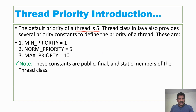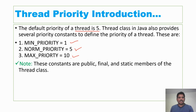The Thread class provides 3 constants: MIN_PRIORITY, NORM_PRIORITY, and MAX_PRIORITY. The MIN_PRIORITY value is 1, NORM_PRIORITY is 5, and MAX_PRIORITY is 10. These constants are public, final, and static members of the Thread class.